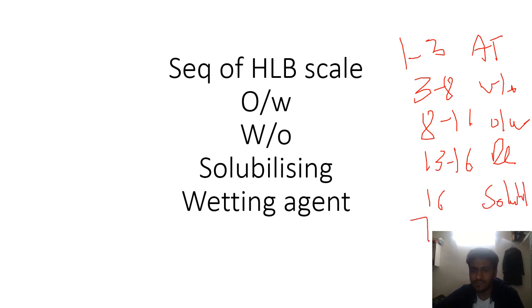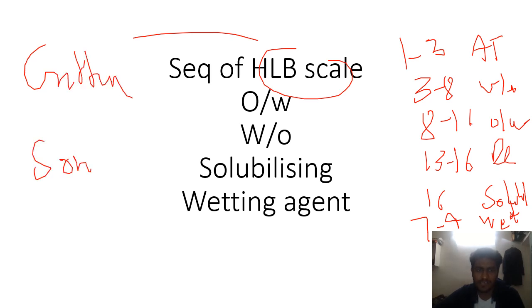Sixteen and above is solubilizing agent. SLS is 40. Tweens, Spans - all of this. Seven to nine is wetting agents. I hope we were able to solve this HLB scale. Griffin has given this HLB scale. Name of the scientist is very important.